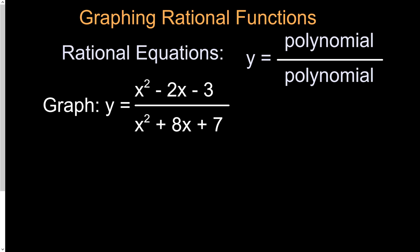In this video we're going to talk about how to graph rational functions. A rational function, or rational equation, is a polynomial divided by a polynomial. There's a series of steps we'll go through to find the different key pieces in these functions, and then at the end we'll actually graph it. The goal is to do this without using a graphing calculator or Desmos, using just our algebra knowledge. Here's our practice problem: x squared minus 2x minus 3 over x squared plus 8x plus 7.